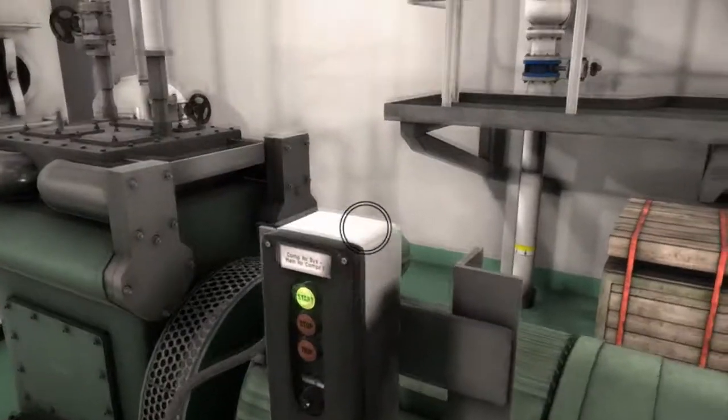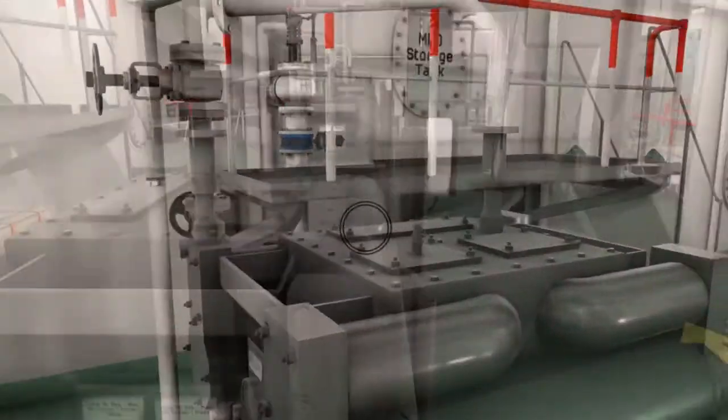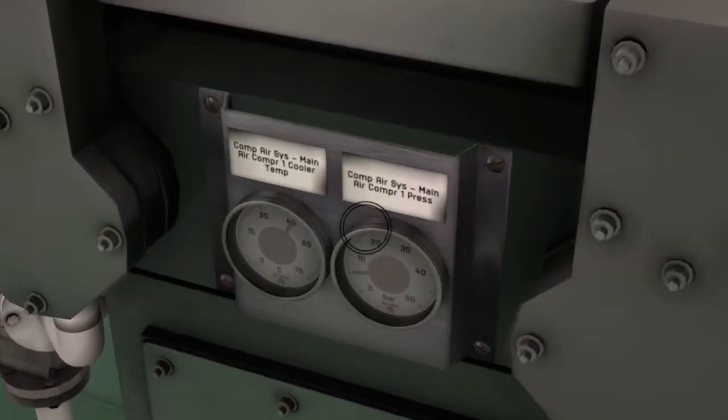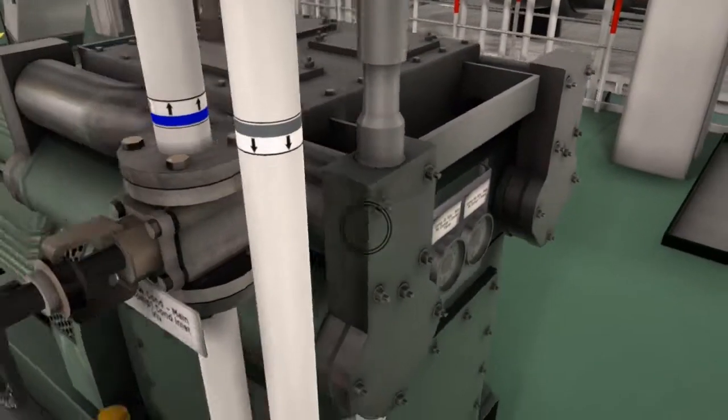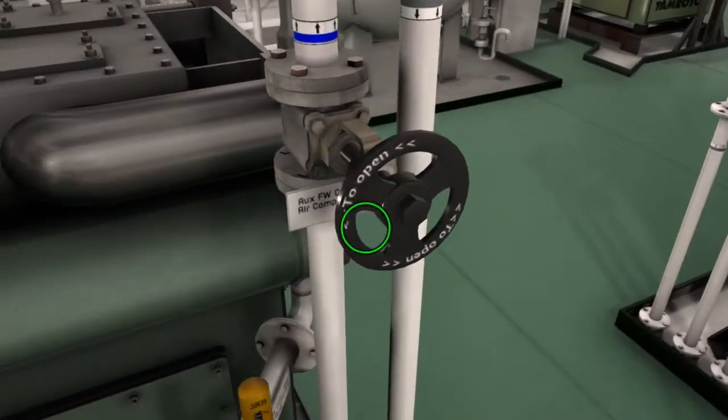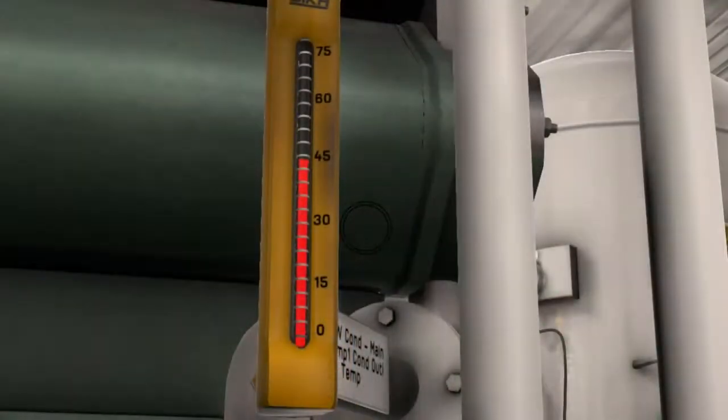Now check the pressure and temperature deviations of the compressor. If any abnormalities are found, rectify it immediately. Then check the cooling water temperatures of the compressor to ensure that it is below 60 degrees Celsius.